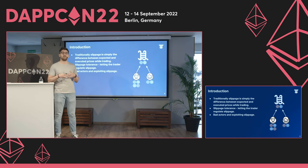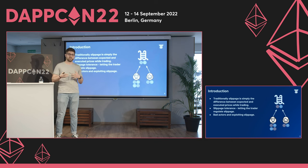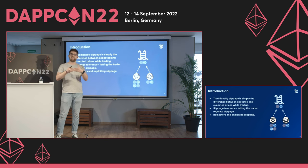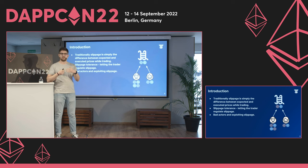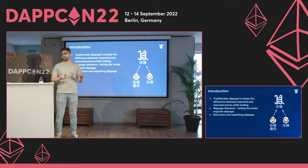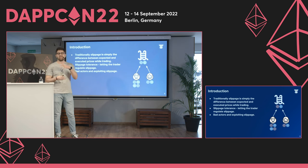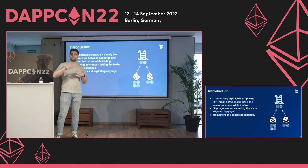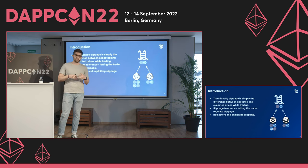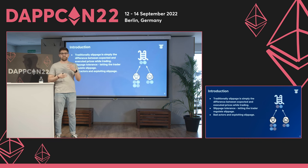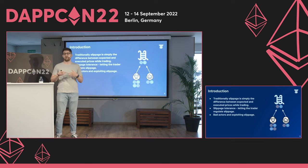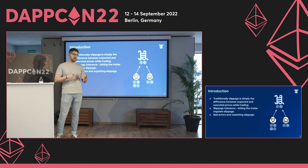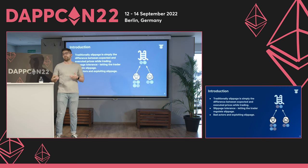A less frequent but important reason for slippage is bad actors who can exploit your slippage tolerance. Once you sign the transaction, the aggregator puts your transaction in the public mempool, and it's out of both their control and yours. Bad actors can exploit your slippage tolerance parameter, do a trade before you, give you a negative price, and gain profit from that. These are known as MEV attacks. We won't go into much detail, but let's move forward with the knowledge that bad actors can exploit slippage tolerance for profit.